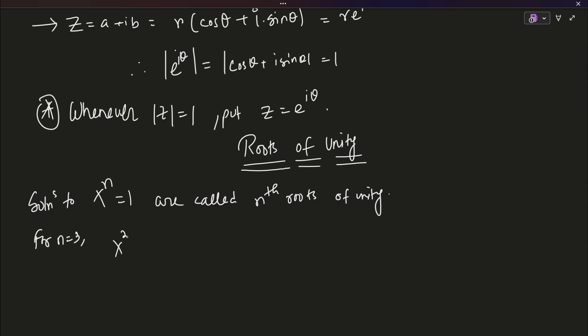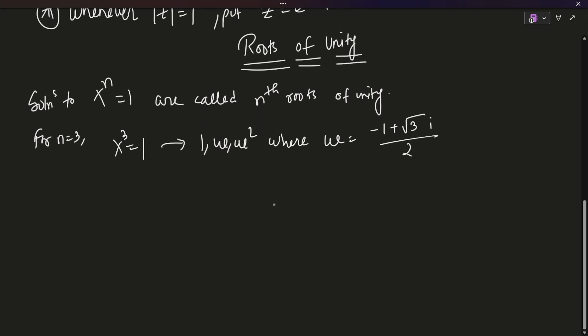You are already taught the special case where for n equals to 3, you simply have x cube equals to 1, whose three solutions are given by 1, omega and omega square, where omega is nothing but minus 1 plus root 3 into i by 2. Now, this is only for the case 3, right? What about the higher cases?